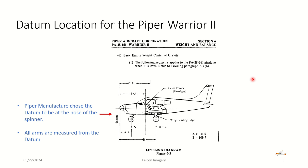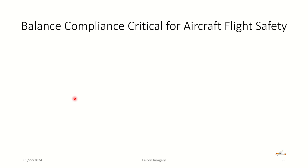In regards to the example we're going to do today, we're going to do it on a Piper Warrior II. Highlighting here that the datum point, out of the Pilot Operating Handbook for the Piper Warrior, is the very tip of the spinner on the nose of the plane — right here — versus at a firewall. Balance and center of gravity are extremely important, and it's important that we comply with the forward and aft CG limits to make sure the aircraft is safe for flight.